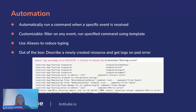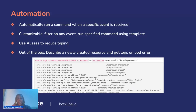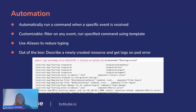For automations, with Botcube you're able to automatically run a command when a specific event is received. For example, you can run the get logs command every time you get an error, allowing you to streamline your process and reduce typing. We also have aliases — instead of having to type out kubectl commands like kubectl get pods, you can use a simple alias like k or kcg to speed up your process.